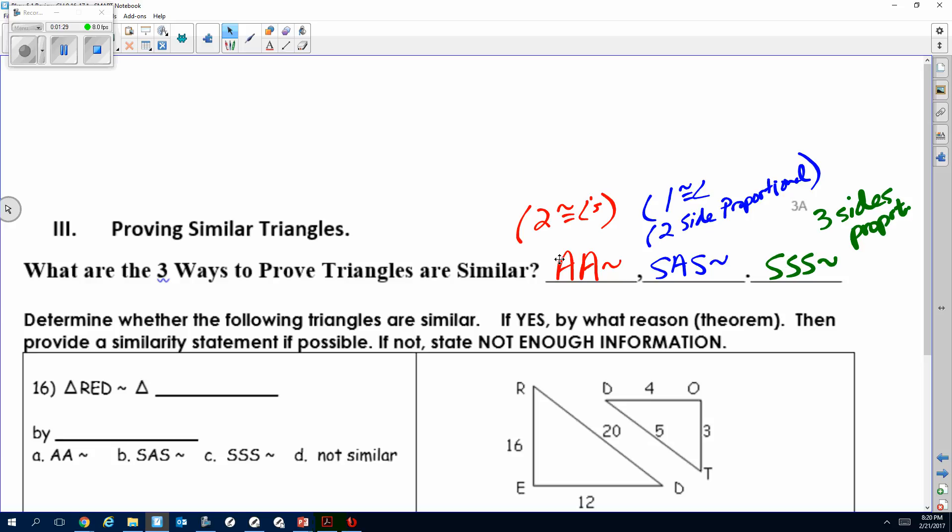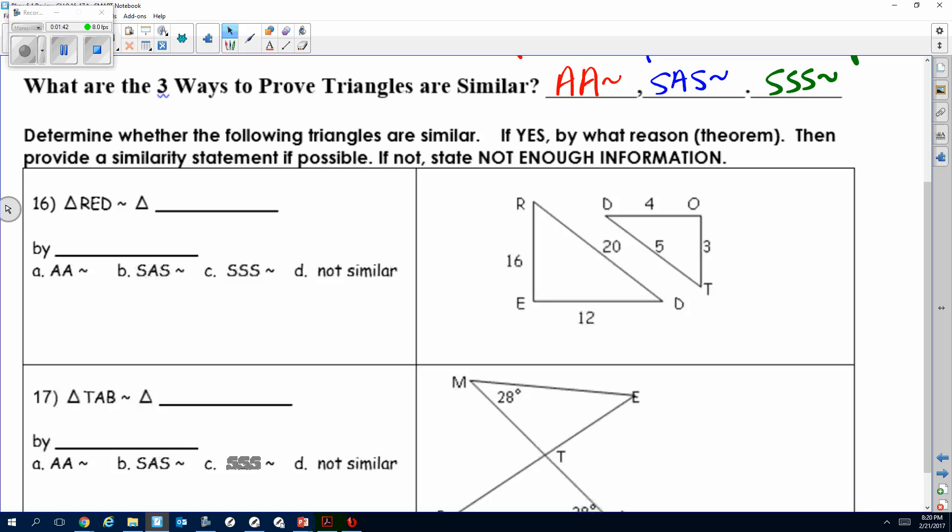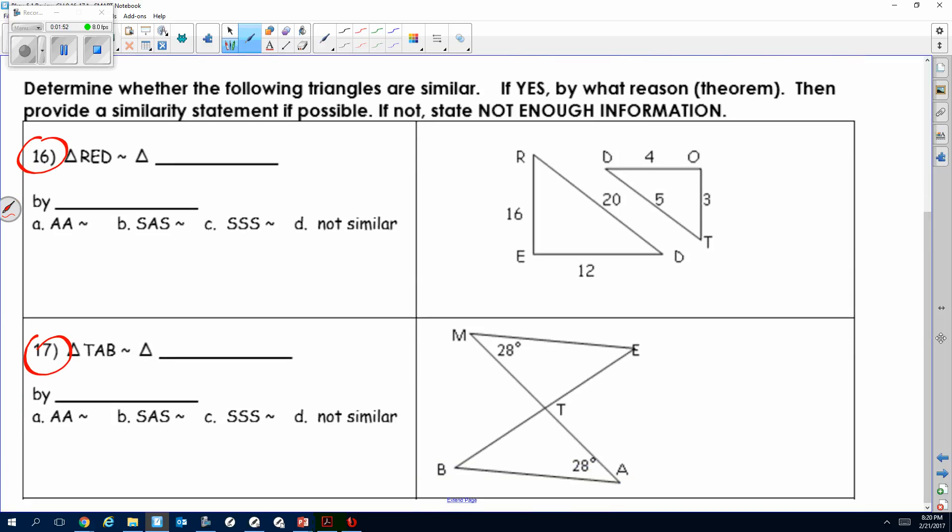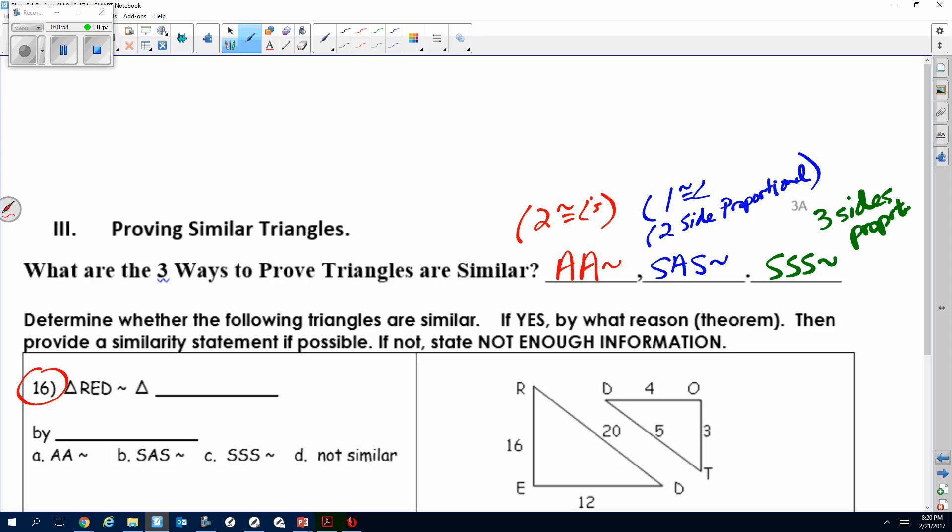We're going to determine whether the following triangles are similar. If yes, by what reason, which one of the three, and then provide a similarity statement if possible. If not, state not enough information. These are all test-like questions. I will probably focus on the odds, but I want to make sure everyone's on the right track.